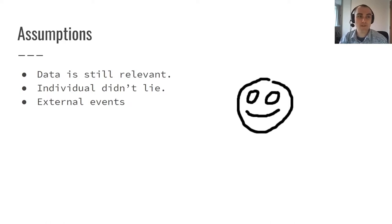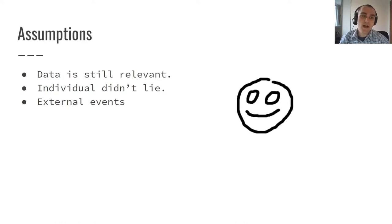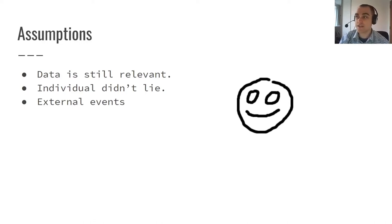We make a lot of assumptions at this point. We're not only assuming this data is recent enough to still be relevant, we're also assuming the individual didn't lie — and that's not necessarily malicious, sometimes people lie to themselves. Someone might claim to be exercising every day, or downplay how well they stick to a healthy diet. We also assume events outside of this dataset can be ignored, including the individual's history, traumas, and societal pressures that drive behavior in unseen ways.